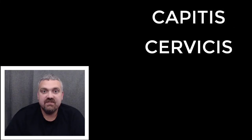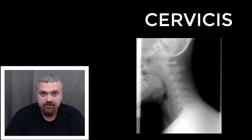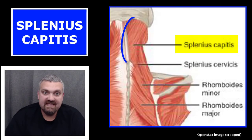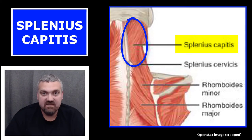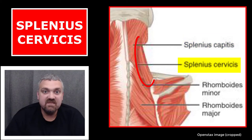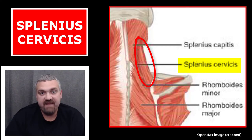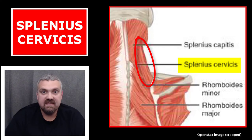Capitus versus cervicis. Capitus means head. Cervicis means neck. The key examples here would be the splenius capitus muscle — splenius means bandage, so imagine wrapping an ace bandage around the back of your head, that would be the splenius capitus muscle. And splenius cervicis would be the bandage-like muscle that wraps around the back of your neck.